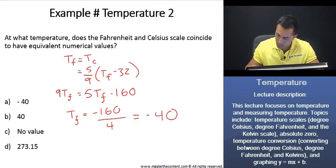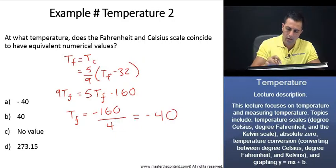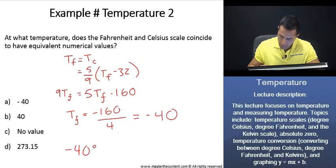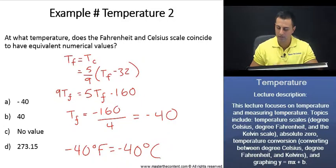And if we solve that, we end up with a value of negative 40. Now, what that negative 40 is telling us is that when the temperature is negative 40 degrees Fahrenheit, that's equivalent to a very cold negative 40 degrees Celsius.